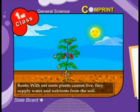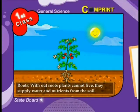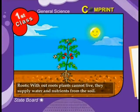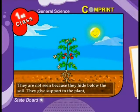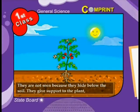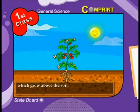Roots: without roots, plants cannot live. They supply water and nutrients from the soil. They are not seen because they hide below the soil. They give support to the plant which grows above the soil.